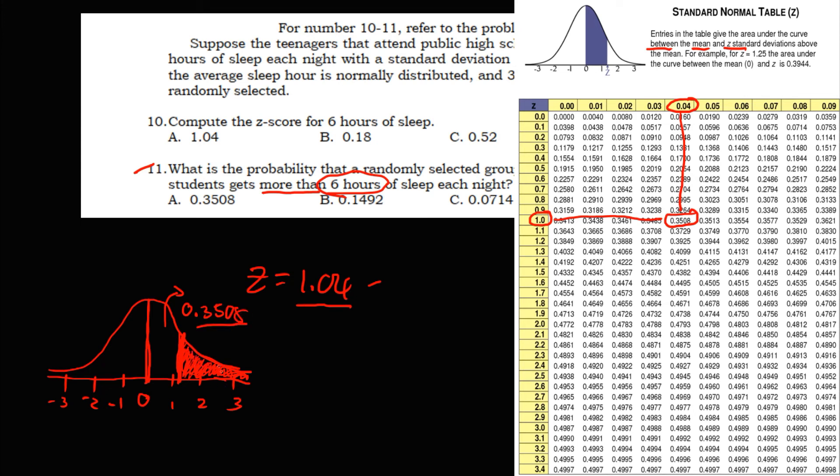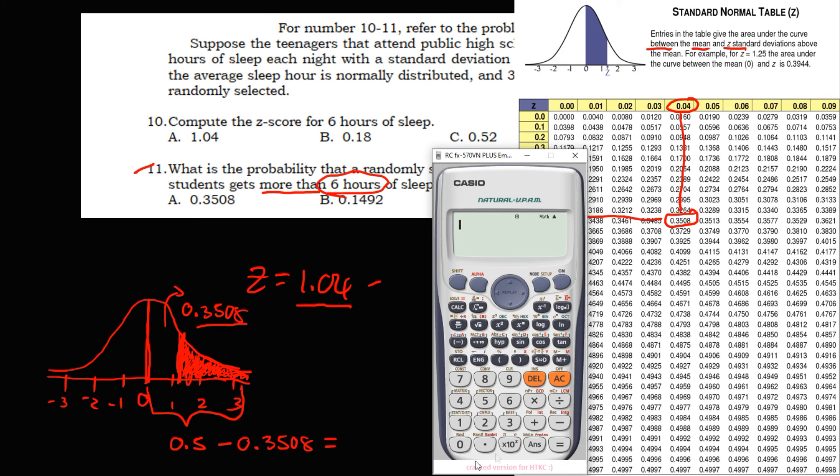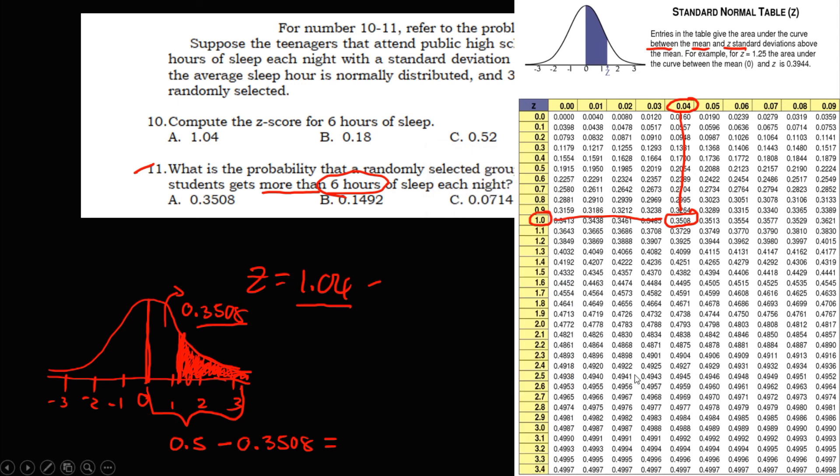And to solve for this area, since half of the curve, the area is 0.5. So therefore, to find for this area, we need to subtract this 0.3508. So we have now 0.5, then minus 0.3508, equals to the area is 0.1492. So the area is 0.1492.